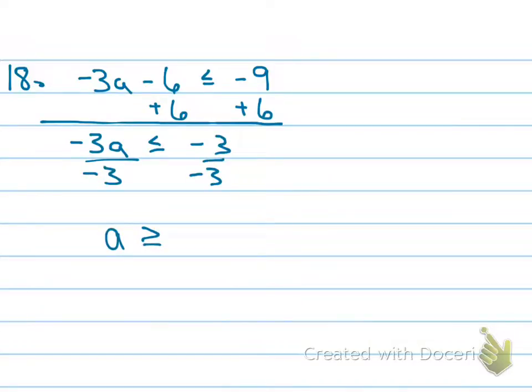Next one. What happens when you have to divide by a negative? You've got to flip that inequality. Don't forget to do that on your test tomorrow. That's why it's A is greater than or equal to 1. And then you graph it. Close dot on the 1, and the arrow going to the right.